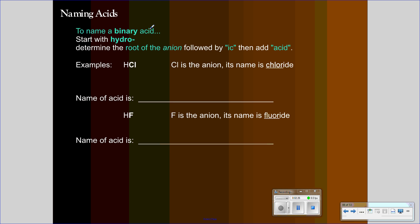So, to name a binary acid, we start with the prefix hydro. After hydro, we find the root of the anion that it's bound to. That's chlorine. The root of chlorine is chlor. So, it will be hydro, chlor, and then the rest of the rule is we add ick at the end of that word. And then, of course, we call it an acid. So, hydrochloric acid. HF, fluorine is your anion, or fluoride is your anion, and the root of fluoride is fluor. So, it's hydrofluoric acid. And that's true for any binary acid.